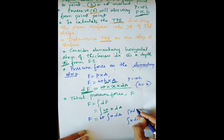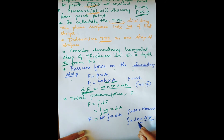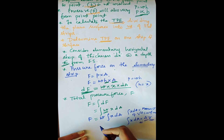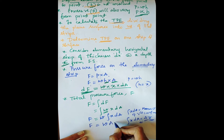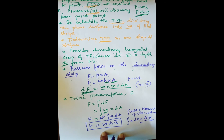Substituting, F = w·A·x̄, which is the same expression as for the horizontal plane surface. So the total pressure force for a vertical plane surface is F = w·A·x̄.